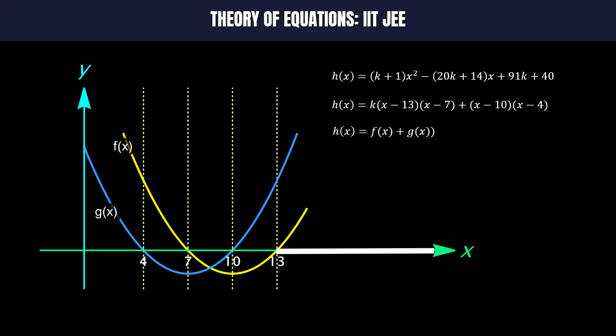And lastly, when x is greater than or equal to 13. In this interval the value of h(x) is always positive because f(x) and g(x) are non-negative. Hence h(x) will not have any root in this interval.